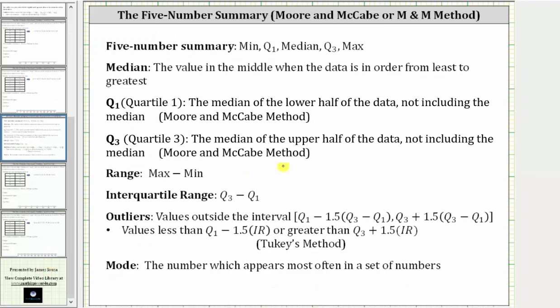The TI-84 uses the Moore and McCabe method to determine quartile one and quartile three, where quartile one or Q1 is the median of the lower half of the data, once the data is ordered from least to greatest, not including the median.